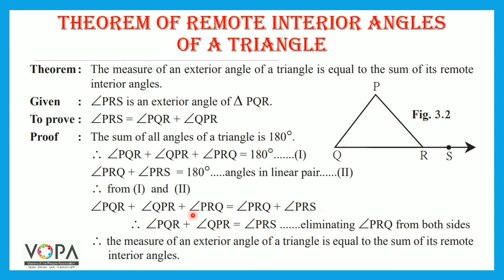Now if you see carefully, angle PRQ appears on both the left-hand side and the right-hand side, so we can eliminate it from both sides. What is left: angle PQR plus angle QPR is equal to angle PRS. Reason: eliminating angle PRQ from both sides. Therefore, the measure of an exterior angle of a triangle is equal to the sum of its remote interior angles.